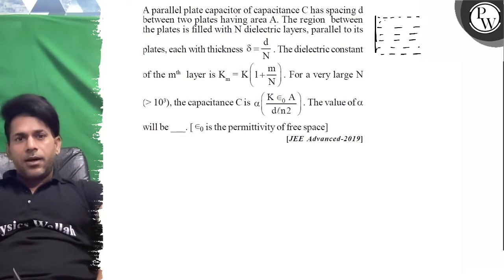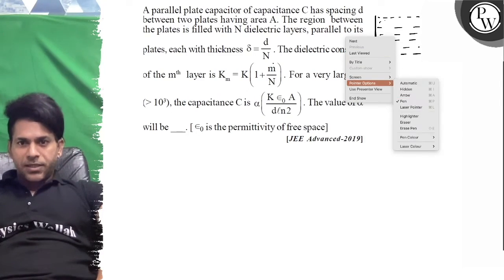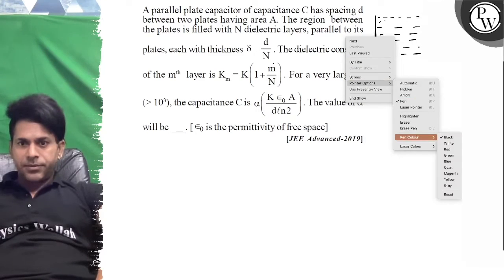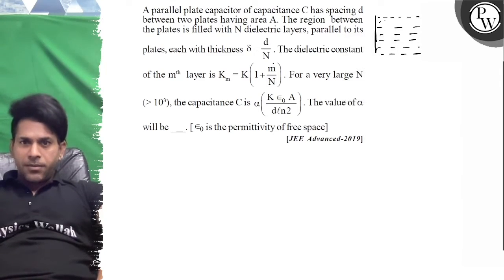We are asked for the nth plate. If we take a small m element on the nth plate, consider a small dm element. This dm element will be here.